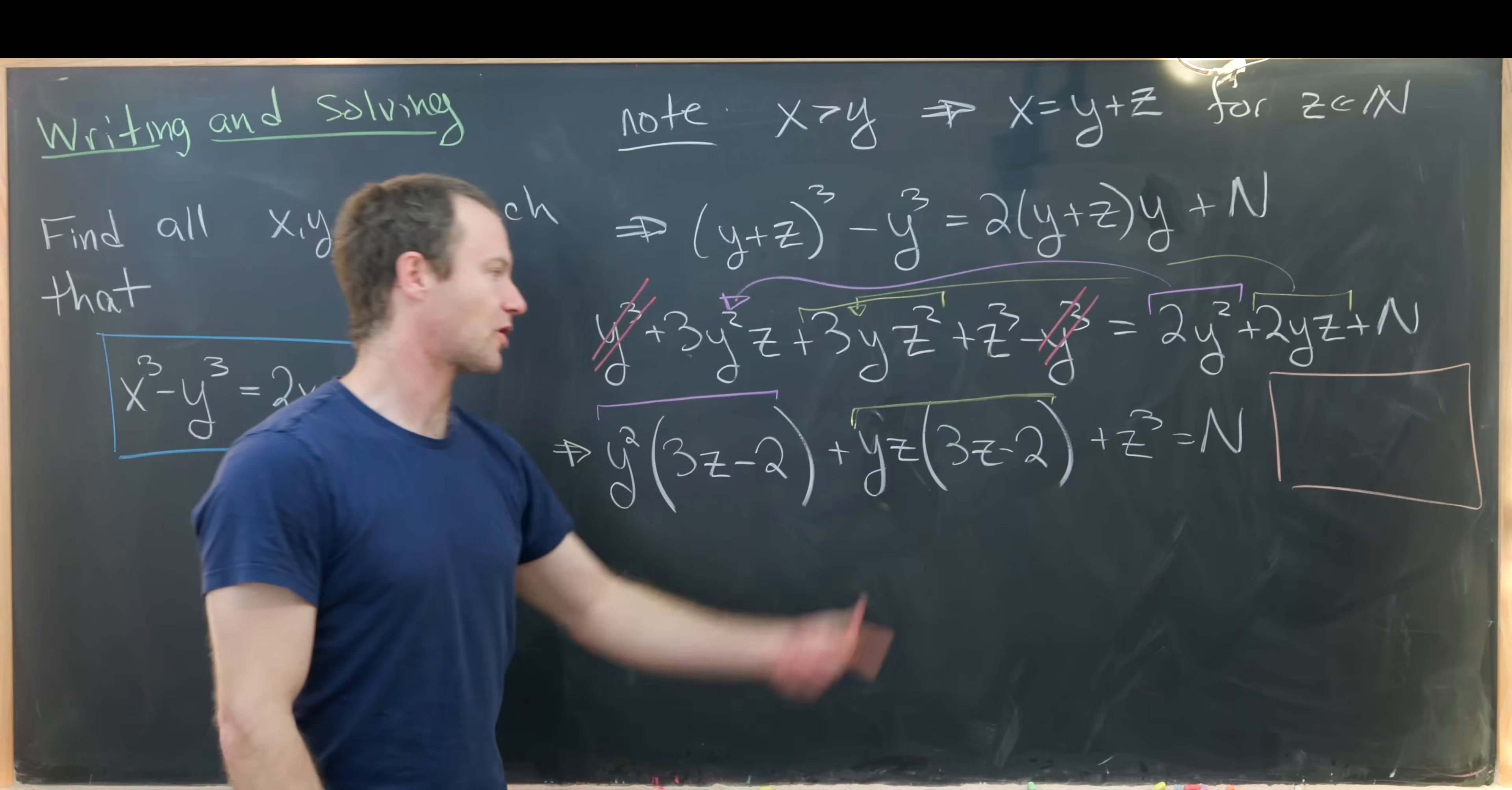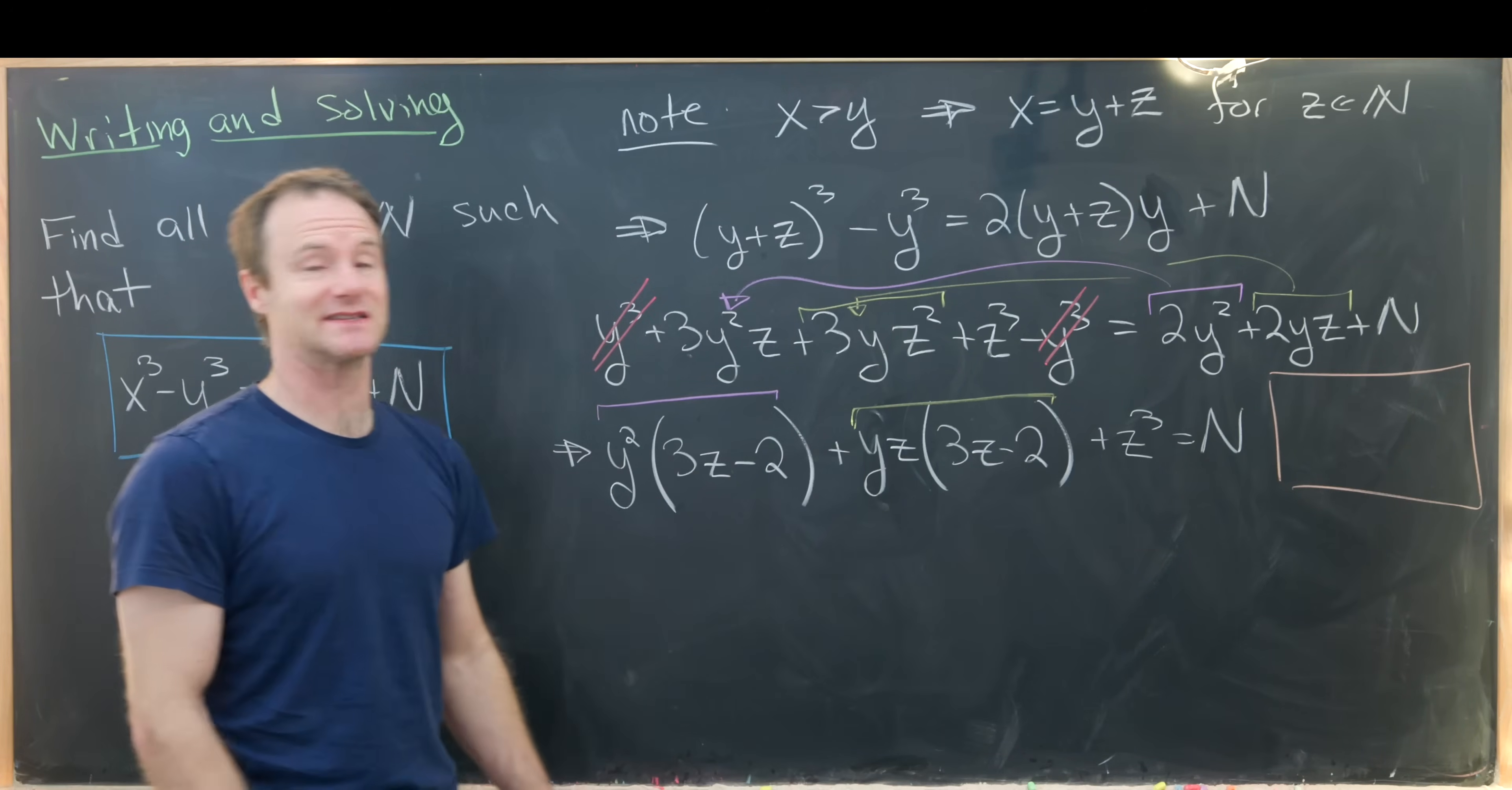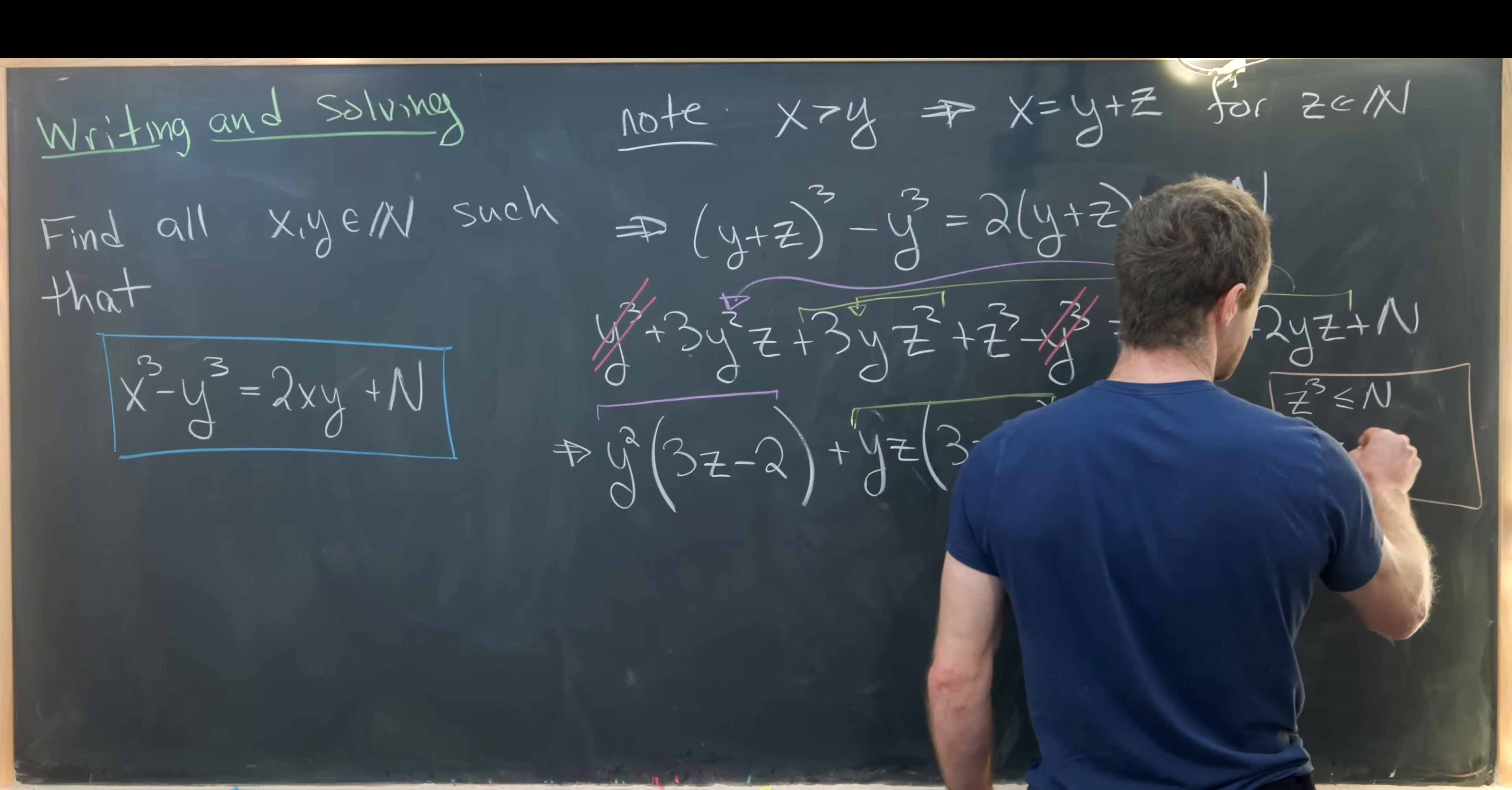So this stuff that's overlined in purple and yellow is positive. So that means if we get rid of it we create something smaller. That means z³ is less than or equal to N.